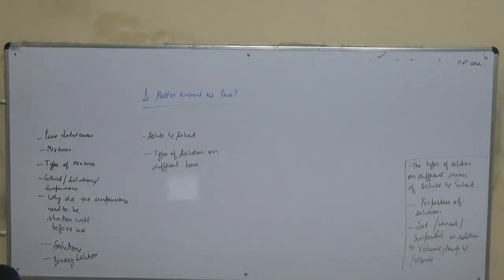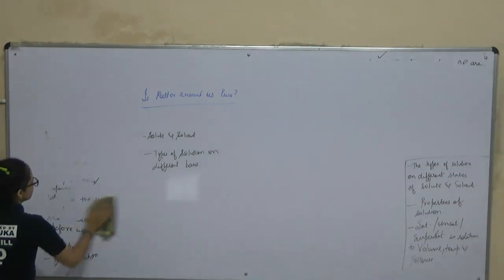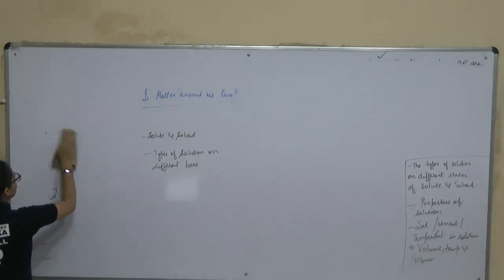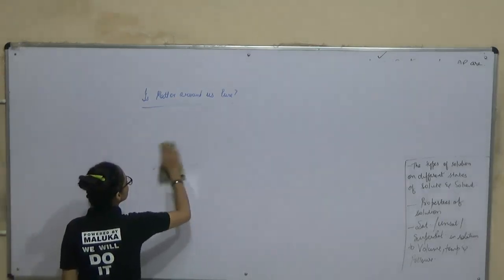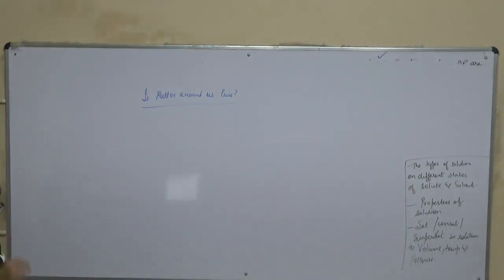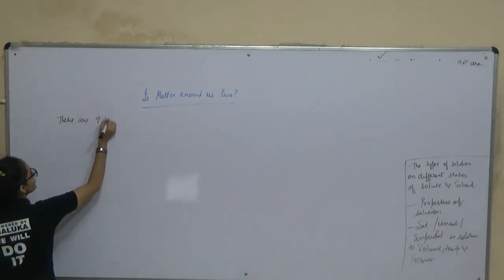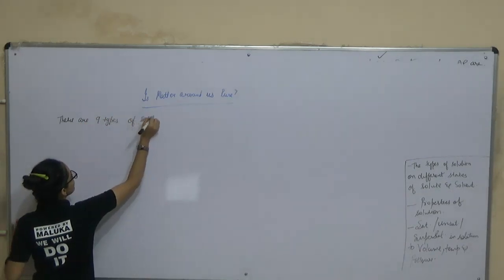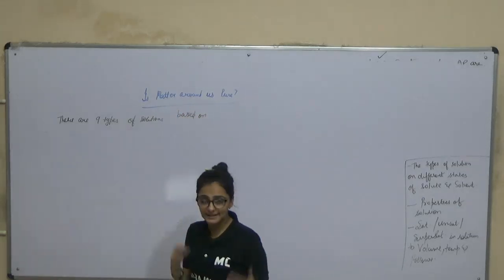Students, you know that a solution is a homogeneous mixture of two substances, in which the properties of both substances are exhibited. There are nine types of solutions based on the different states of solute and solvent.